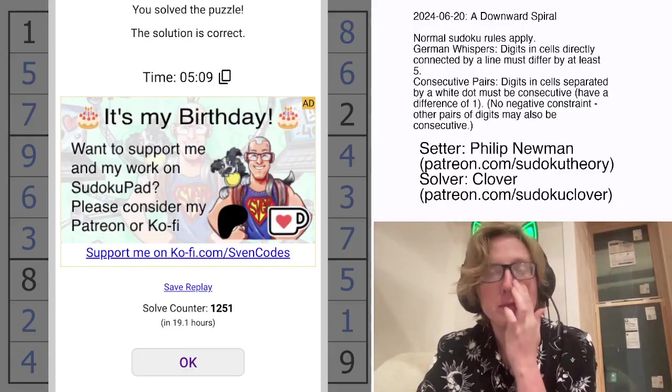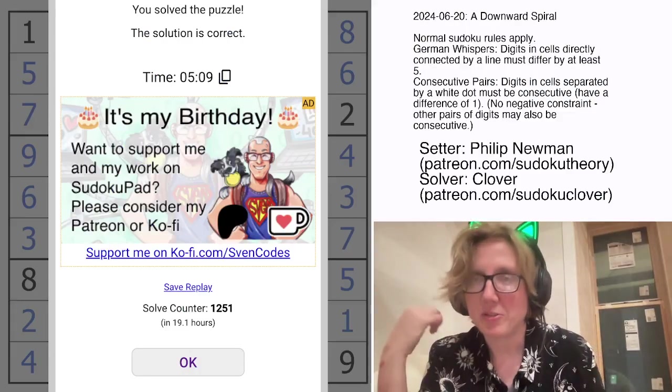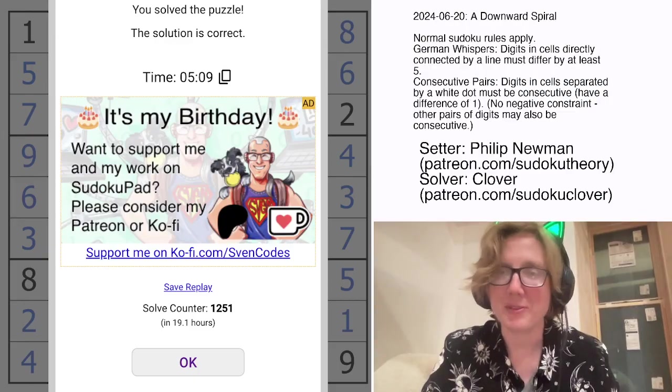And that is how you solve a downward spiral by Philip Newman. The link to solve it yourself is in the description below this video. Hope you enjoyed that. And I will see you in the next one.